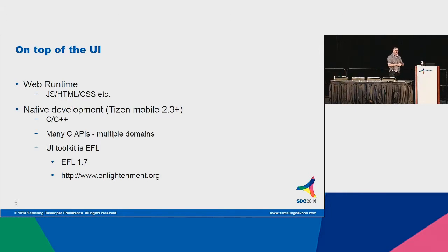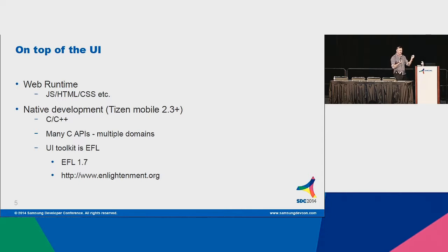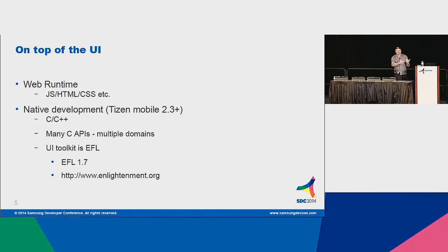On top of this base display there's the web runtime — basically a big browser minus the chrome, minus the URL bars, et cetera. That's where you get your JavaScript, HTML, CSS for your applications. In parallel, there is native development — you can write your programs in C or C++. As of Tizen 2.3, all the APIs are native C APIs; we have actually deprecated the C++ API set that we had.